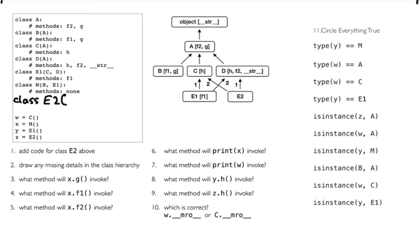I can see that E2's favorite parent is D — arrow 1 goes to D — and then its second favorite parent is C. So basically the exact opposite of E1. So I'll write: class E2(D, C). And then does it have any methods? It has no methods, so I'll make a note of that. I've added the code for E2.